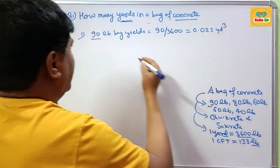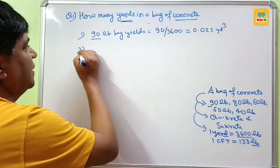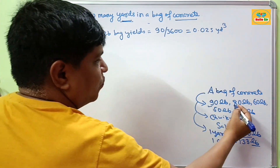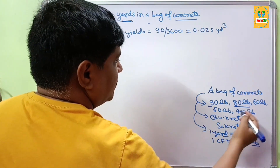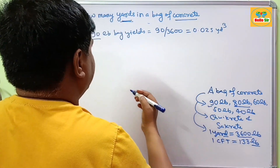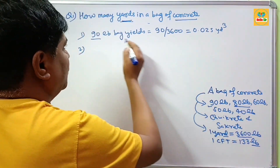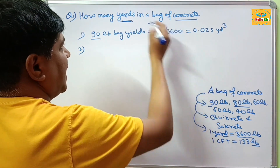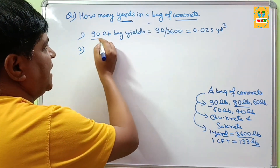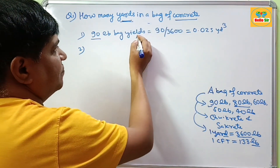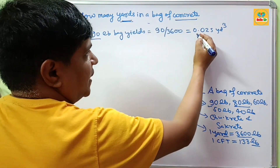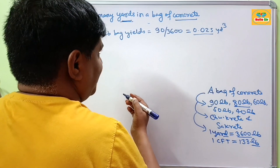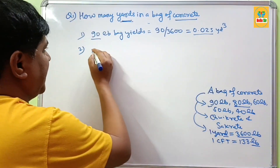For a 90 lb bag of concrete: 90 divided by 3600 gives the yield. The answer to how many yards are in a 90 lb bag of concrete is 0.025 cubic yards.